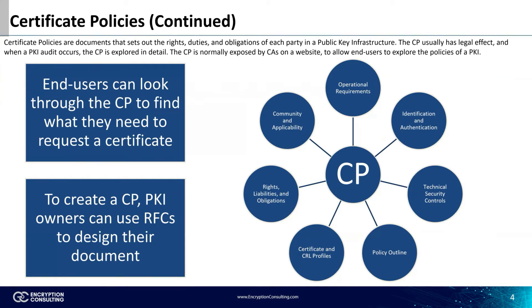To create a CP, the PKI owner can use RFCs, such as RFC 3647, which helps owners ensure that their certificate policy contains all the components needed. The components that make up a CP are the operational requirements, identification and authentication, technical security controls, policy outline, certificate and CRL profiles, rights, liabilities and obligations, and community and applicability. Each of these sections highlights the different rules relating to PKI.